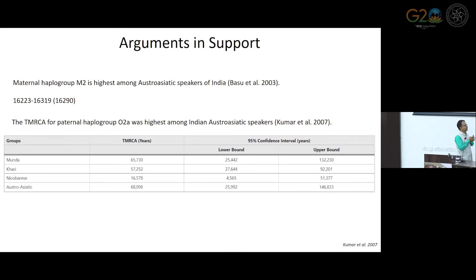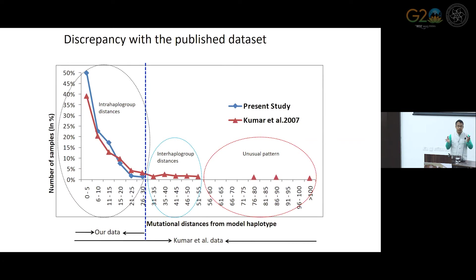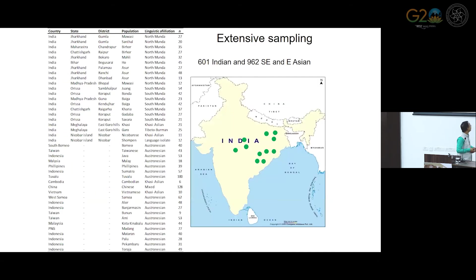Haplogroup M2, one of the most ancient Indian haplogroups present in the Indian population, is also present at around 20 percent frequency among Austro-Asiatic speakers — which was one reason they were considered the most ancient settlers. However, there were problems with identification: the researchers misidentified East Asian lineages as M2, and the O2A dating was also complicated. We used their data compared with our data and found unusual inter-haplogroup distances within the YSTRs, with some YSTRs showing very unusual distributions — that is why they got a wrong age of 65,000 years.